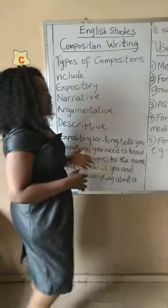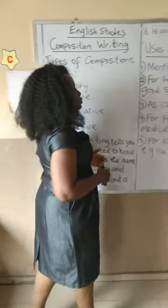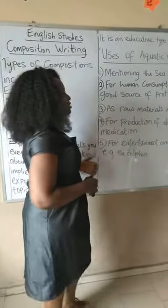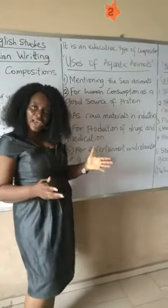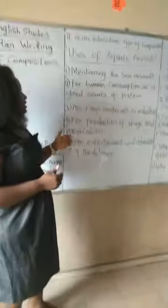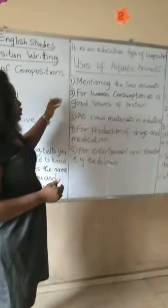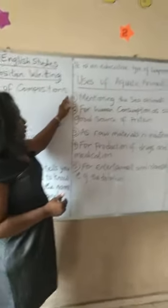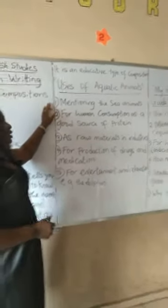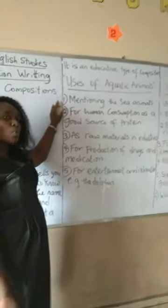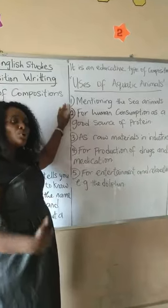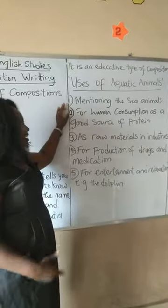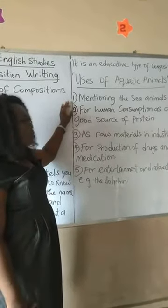Now I would like you to take just 10 lines — in 10 lines write a simple composition on the topic: uses of aquatic animals. What do we use aquatic animals for?